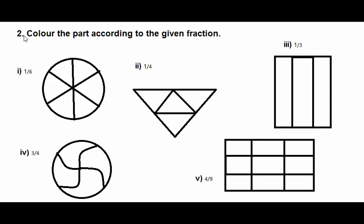Second question says color the part according to the given fraction. First question is one over six — total six parts, we have to paint one part of it, so here we paint with green color. Second is one over four, we have to paint one part out of four.